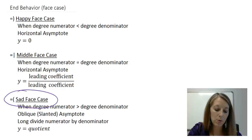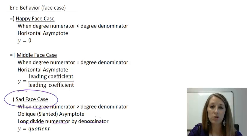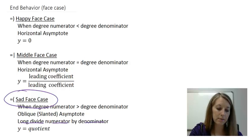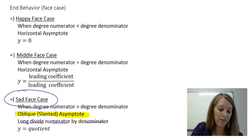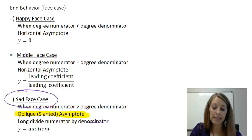And what we need to do is we need to long divide the numerator by the denominator. A lot like long division that you did back in grade school. And whatever answer you get, that's going to be your oblique or your slanted asymptote. So whenever you're in sad face case, you're going to have an oblique asymptote.